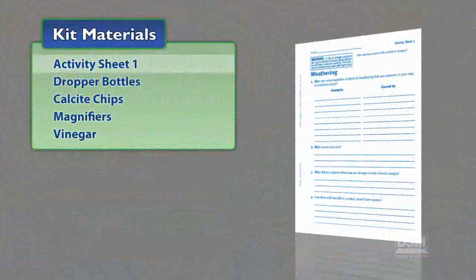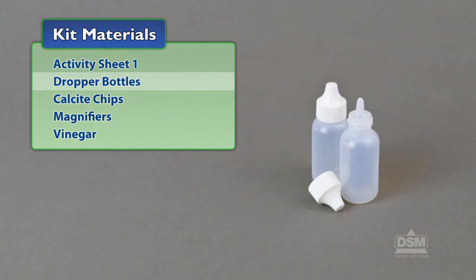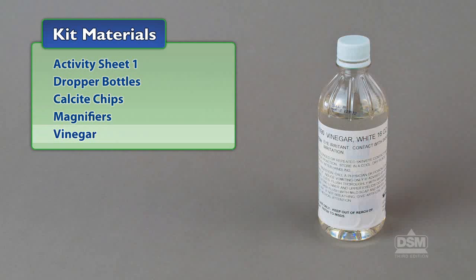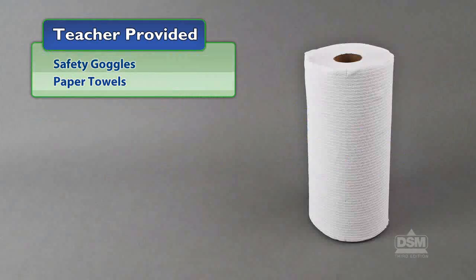You will need the following materials from the kit: Activity Sheet 1, dropper bottles, calcite chips, magnifiers, and vinegar. You will also need to provide safety goggles and paper towels.